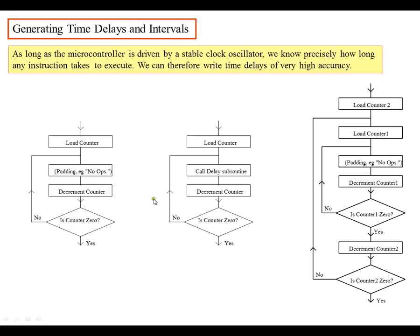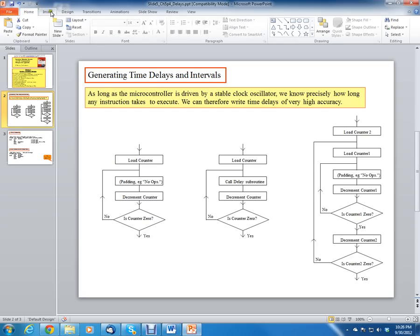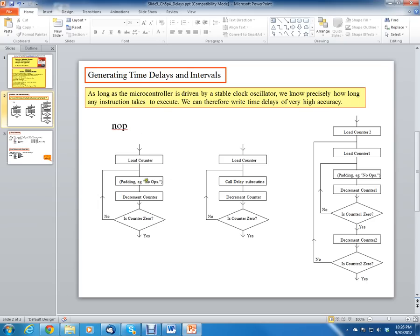Let's go through a flow diagram of what a delay would look like. Typically you load some type of counter, then you put some no-operation statements. There's an instruction called no-op, which means no operation — it just doesn't do anything. It's used to waste some time with dummy code inside the loop.